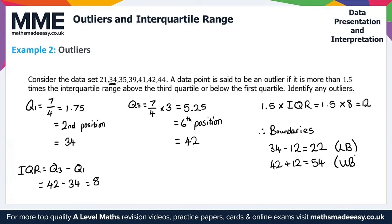Now we check the dataset for outliers. For the lower boundary, we're looking for any values less than 22 — we can see 21 is in the dataset, so 21 is an outlier. For the upper boundary, any values larger than 54 would also be outliers, but the largest data point is 44, so there are no further outliers. Therefore, 21 is the only outlier in Example 2.